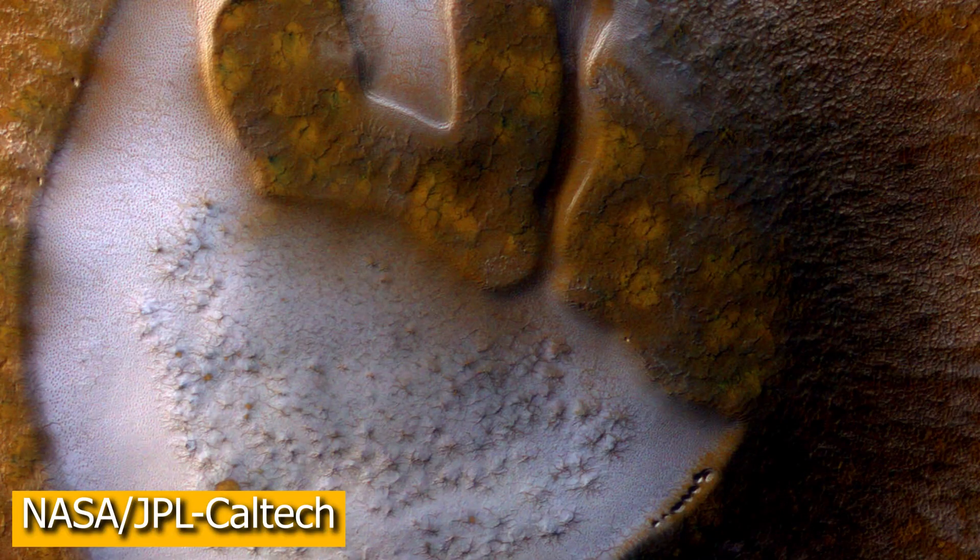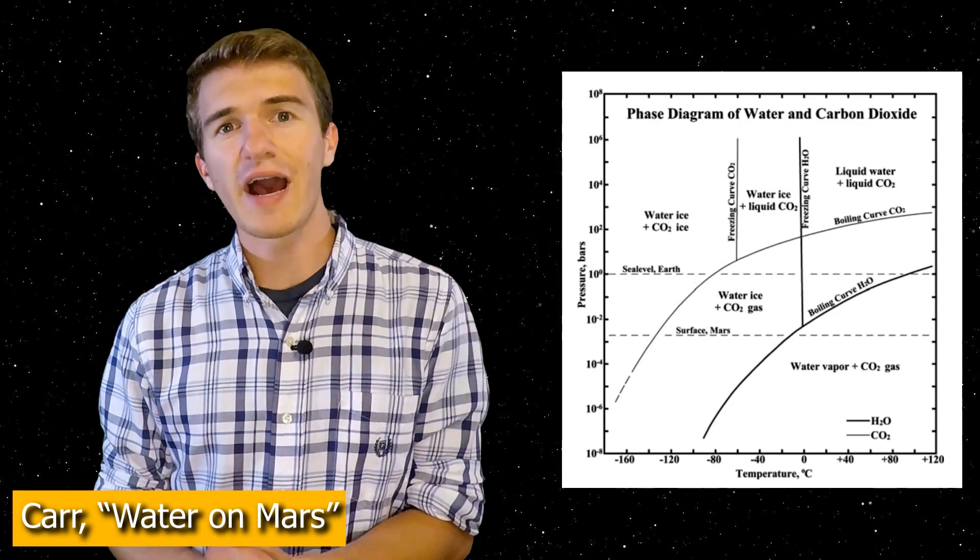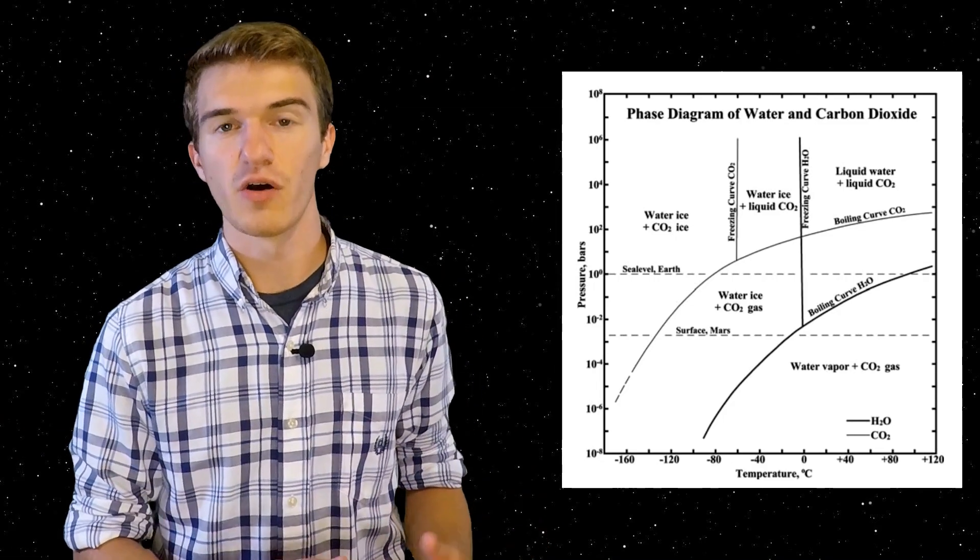Essentially, sublimating is when it goes from a solid directly to a gas. Typically, when you think of something like water, you have ice, and then the ice goes to a liquid, and then the liquid goes to a gas. However, depending on a combination of pressures and temperatures, you can actually go directly from a solid to a gas. And that term is called sublimating.